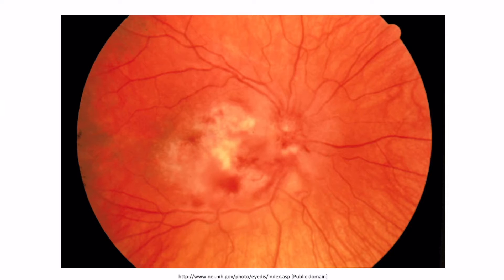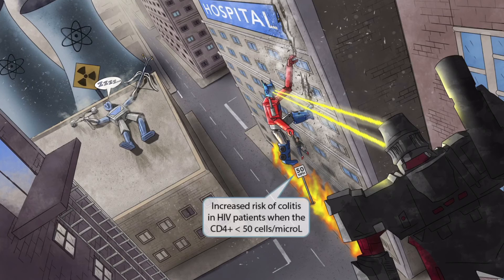This is a fundoscopy image of CMV retinitis. You can see areas of hemorrhage and white spots, which are sometimes referred to as cotton wool exudates.